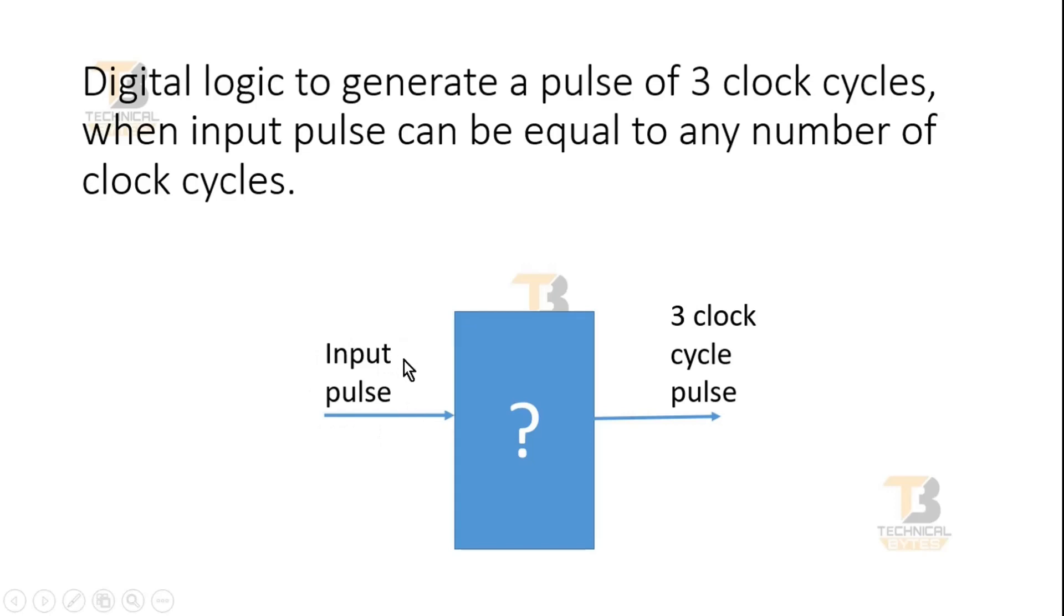This input pulse can be of 1 clock cycle, 2 clock cycles, 3 clock cycles, or 100 clock cycles. But output pulse should always be 3 clock cycle pulse, and it should be generated whenever there is an input pulse available.